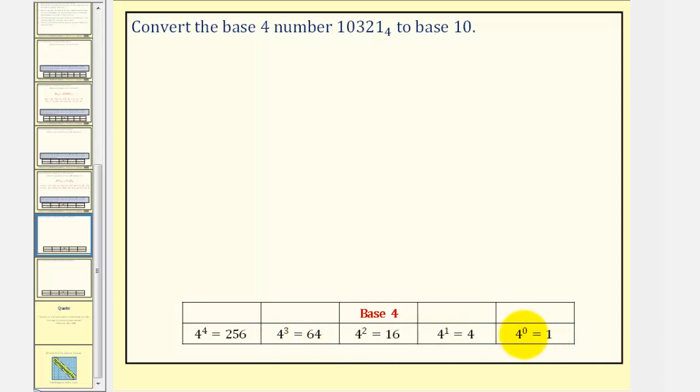Increasing the exponent on 4 by 1 each time. So we have 4 to the zero, 4 to the first, 4 to the second, 4 to the third, and 4 to the fourth. Notice here we have 5 place values, the same as our number.